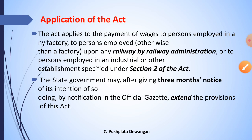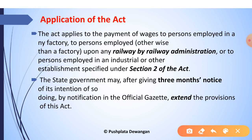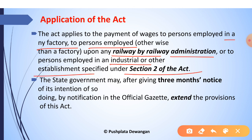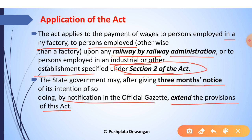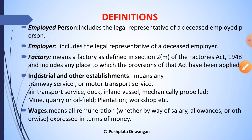The Act applies to the payment of wages to persons employed in any factory, to a person employed upon a railway or railway administration, or a person employed in an industrial or other establishment specified under Section 2 of this Act. The state government may, after giving three months' notice, extend the provisions of this Act by notification in the official gazette.